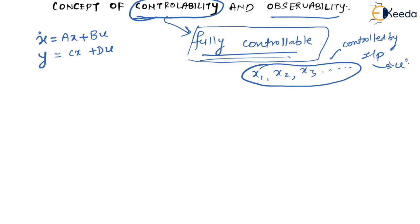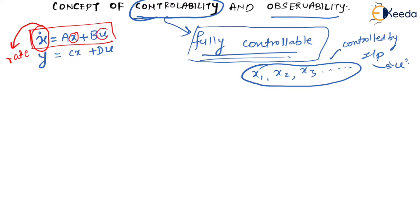If you see the state space model, X is the state and X-dot is the rate at which the state is changing. My input U is present here and will be responsible for controlling the states X, giving a proper rate of change of those states.